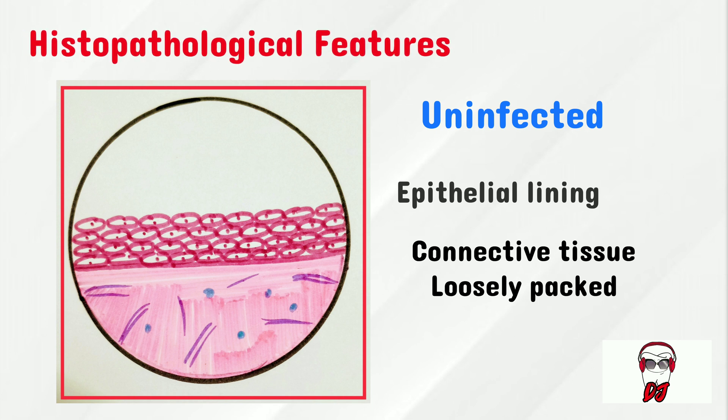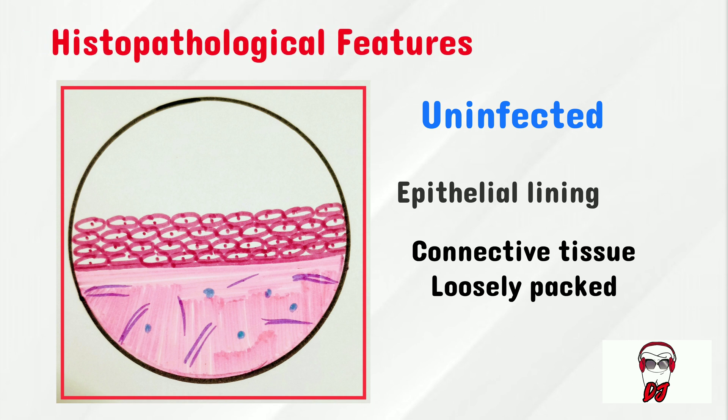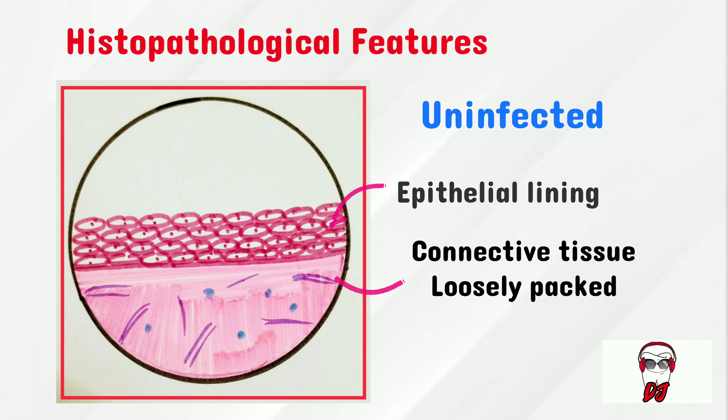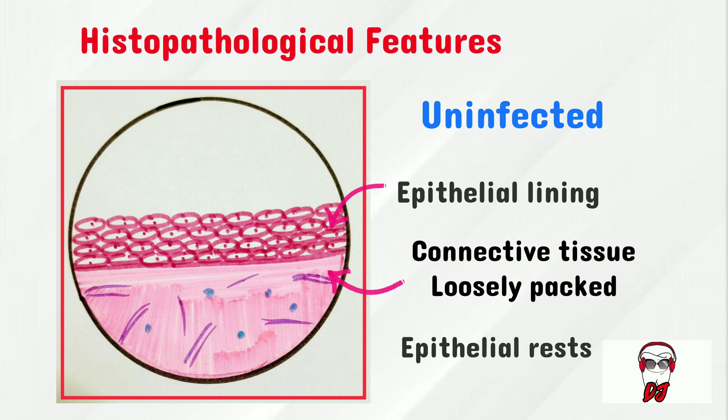Now, in an uninfected cyst, the epithelium will be non-keratinized, usually flat, around three to four layers thick. The connective tissue will contain loosely arranged fibers with epithelial rests.